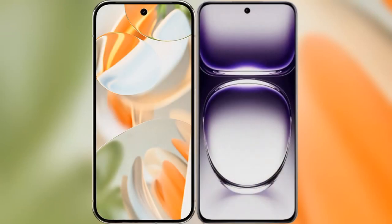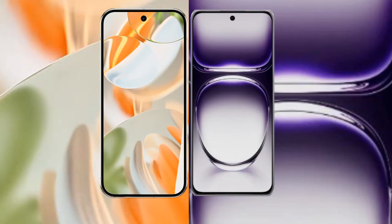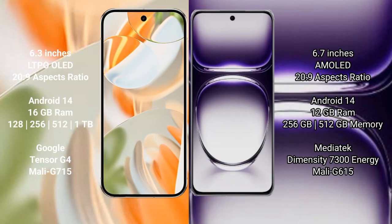I will compare the new Google Pixel 9 Pro with Oppo Reno 12. Google Pixel 9 Pro features a 6.3-inch LTPO LED display, while the Oppo Reno 12 features a 6.7-inch AMOLED display. Both phones are paired with the Snapdragon processor.